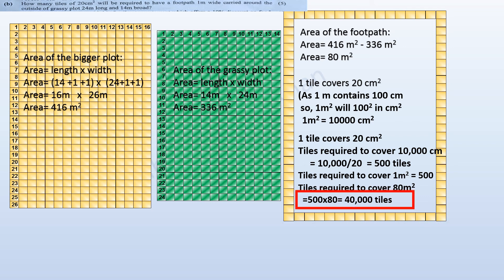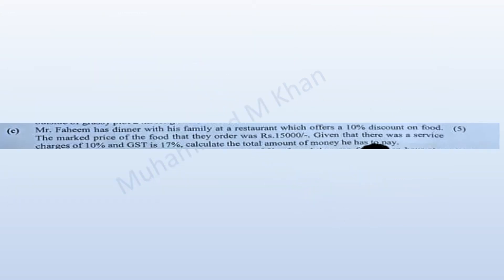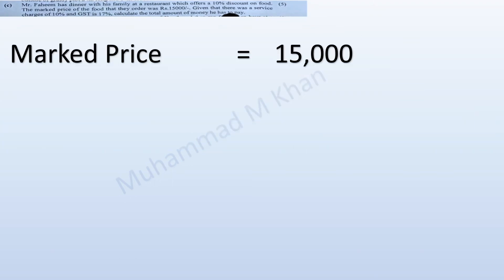That was the required solution for Part B of Question 6. Now let me move forward to Part C. Mr. Fahim went to a restaurant where the marked price of the food order was 15,000. The restaurant offers a 10 percent discount on food.